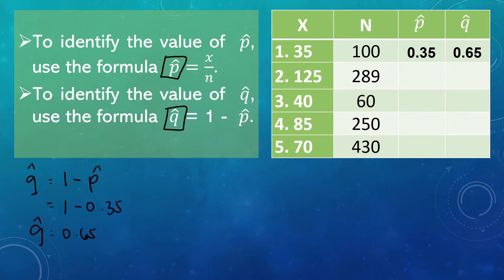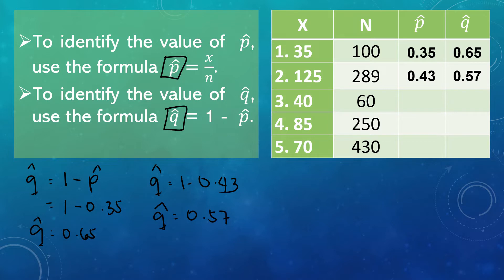For number 2, we divide 125 by 289. Dividing 125 by 289, we get P-hat equal to 0.43. To find Q-hat, Q-hat equals 1 minus 0.43, so Q-hat is equal to 0.57. For number 3, 40 divided by 60 is equal to 0.67. To find Q-hat, Q-hat equals 1 minus 0.67, so Q-hat is equal to 0.33.